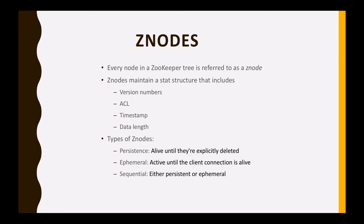Persistence node — it is alive until it is explicitly deleted. A node can be deleted by calling the delete API. This means until the user or admin manually removes it, the node will remain available.